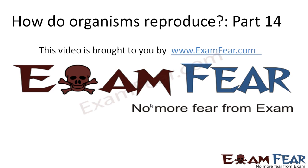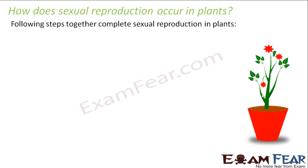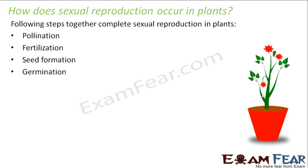Hello friends. This video on how do organisms reproduce, part 14, is brought to you by examfear.com. The following steps together constitute complete sexual reproduction in plants: pollination, fertilization, seed formation, and germination. These four steps taken together complete the entire reproduction cycle in plants.